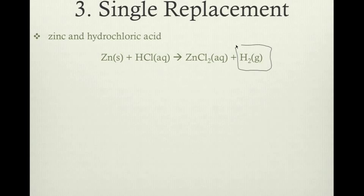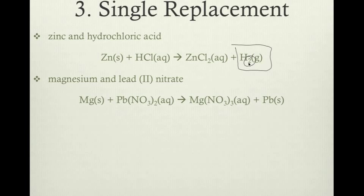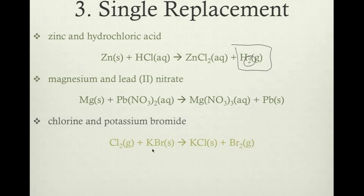Note that H₂ is still an element even though it has two hydrogens — the diatomics are still elemental even with a subscript of 2. Another example: magnesium and lead(II) nitrate react — magnesium switches places with the lead, producing magnesium nitrate and lead. Also, chlorine and potassium bromide react — non-metals replace non-metals — producing potassium chloride and bromine gas.